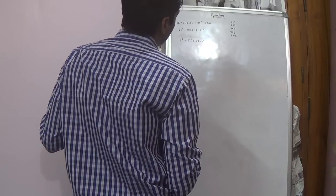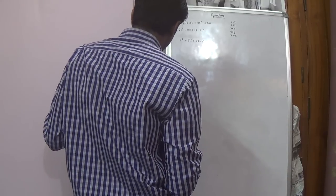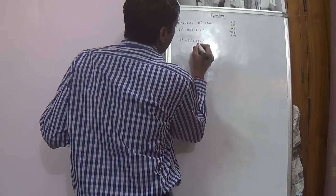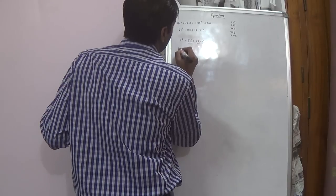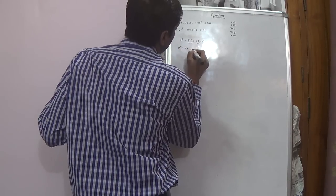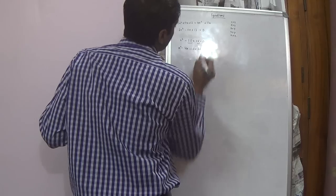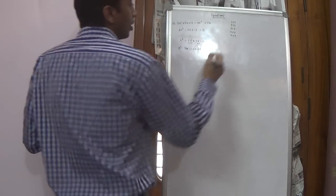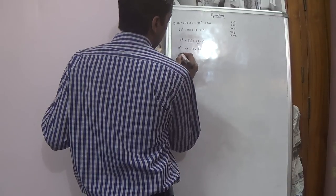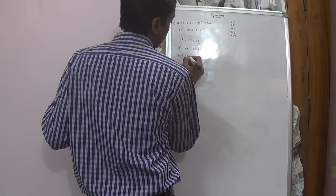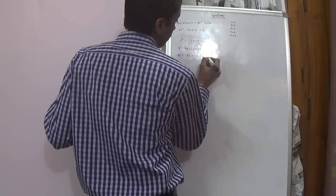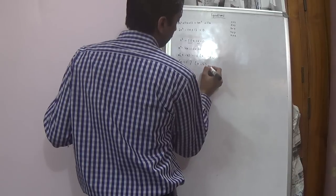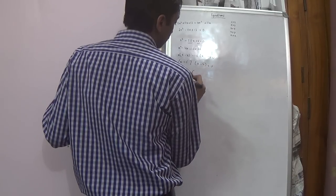We will try to take factors whose sum is 5.5 and multiplication is 6. This gives x square minus 4x minus 1.5x plus 6 equals 0. Taking x common: x(x minus 4) minus 1.5(x minus 4) equals 0, giving (x minus 1.5)(x minus 4) equals 0. So the values are x equals 1.5 and x equals 4.